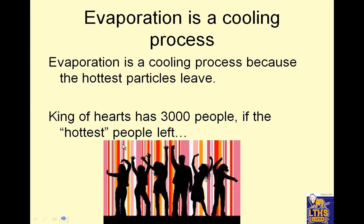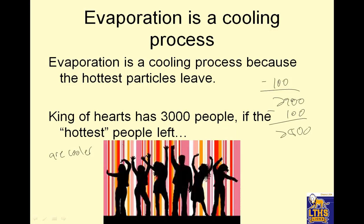Evaporation is a cooling process. The hottest particles will leave. So if we start with 3,000 people and 100 of the hottest people left, there would be 2,900 people. Then if another 100 of the hottest people left, there's 2,800. Eventually you're left with the cooler ones — the king of hearts, my smiley face, and Dino in his sweater, looking all suave.